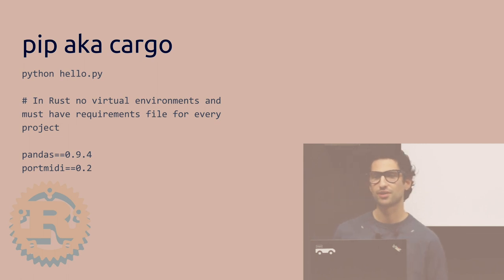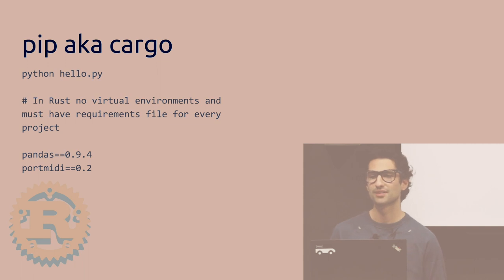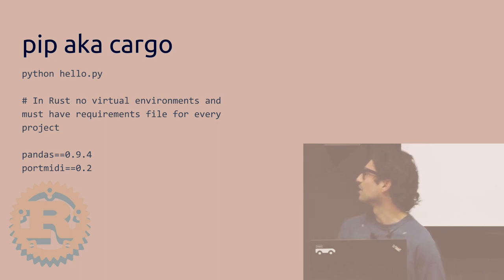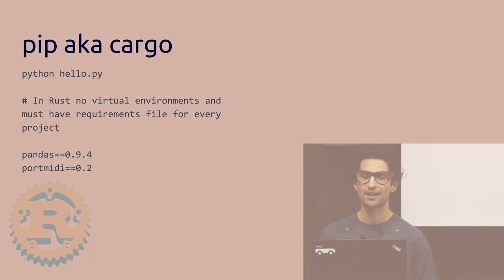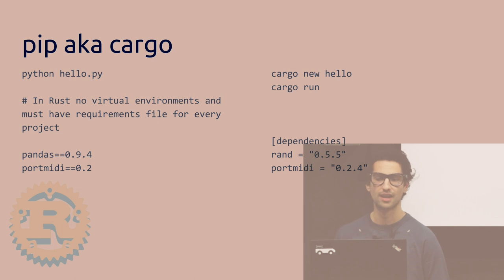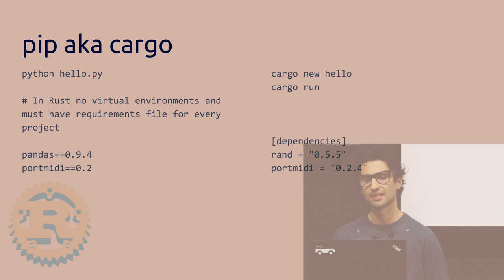In order to run Rust code, you use something called Cargo, which is similar to pip but also how you run the code. In Python you do 'python hello.py', and in your requirements file you use double equals and the version number. In Rust there are no virtual environments, and you need a requirements file for every project. The syntax is similar except there's only one equal sign and you use quotes. You do 'cargo run' inside the directory instead of specifying the filename.